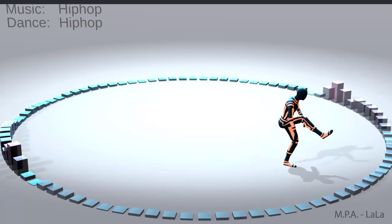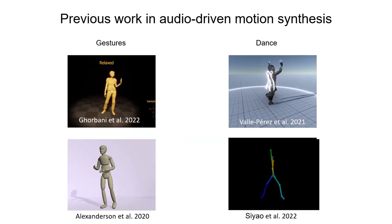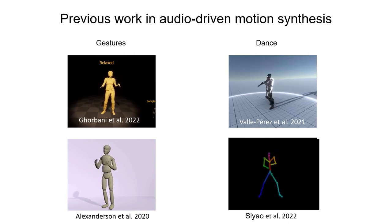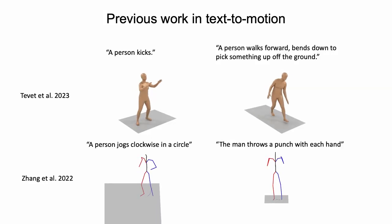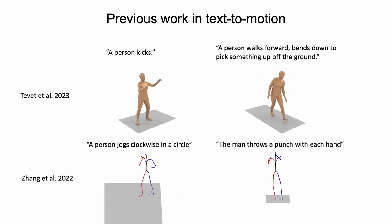Audio-driven motion synthesis is difficult, as people move very differently to the same sound. This calls for strong probabilistic models, making diffusion models a compelling choice. Some recent work generates motion from text. Such text descriptions only amount to meta-information about the motion and are not synchronized with audio.